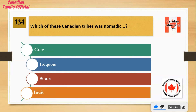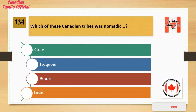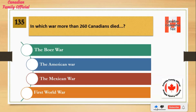Which of these Canadian tribes was nomadic? Number 1: Cree. Number 2: Iroquois. Number 3: Sioux. Number 4: Inuit. And the answer is Sioux.